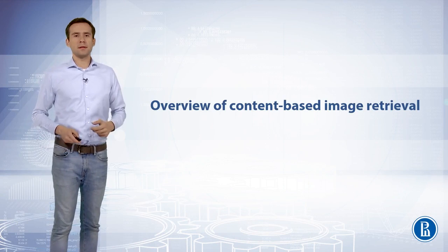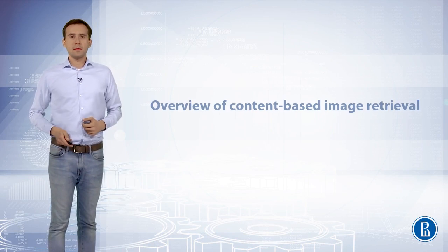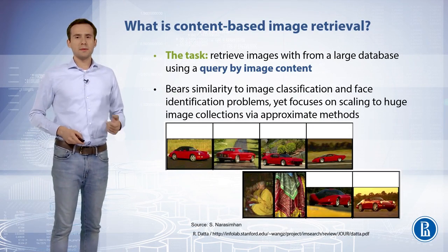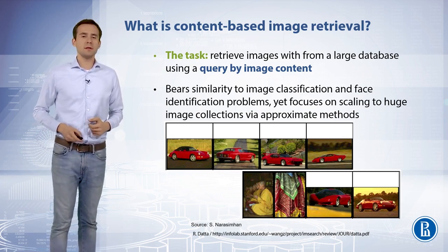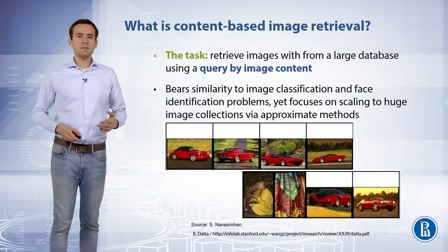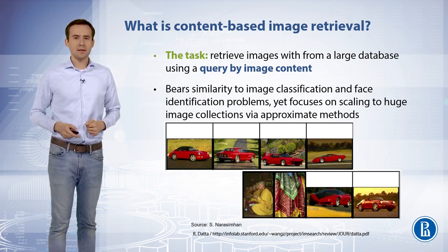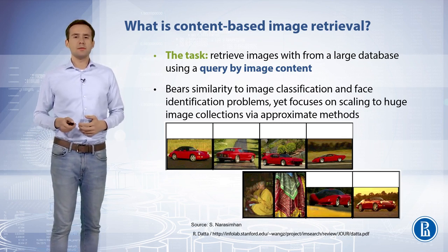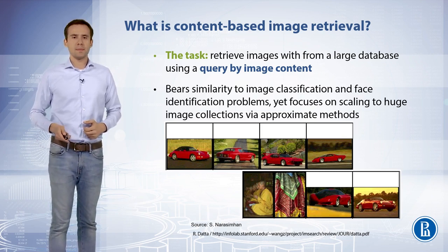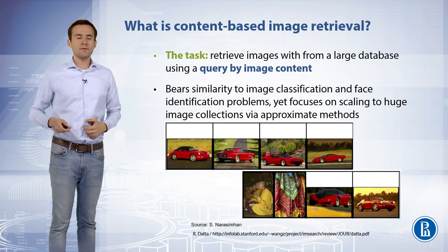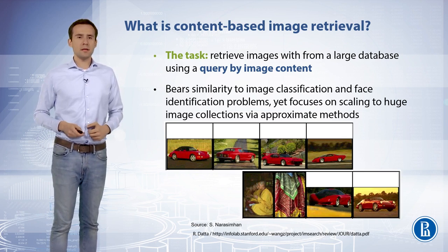In this video you will learn about content-based image retrieval and how image similarity may be defined. Content-based image retrieval, or CBIR, also known as query by image content, is the problem of searching for digital images in large databases. Given a query with some description of the content, the task is to retrieve matching images. Content-based means that the search analyzes the contents of the image, rather than the metadata such as keywords, tags, or descriptions associated with the image. The term content in this context might refer to colors, shapes, textures, or any other information that can be derived only from the image itself.